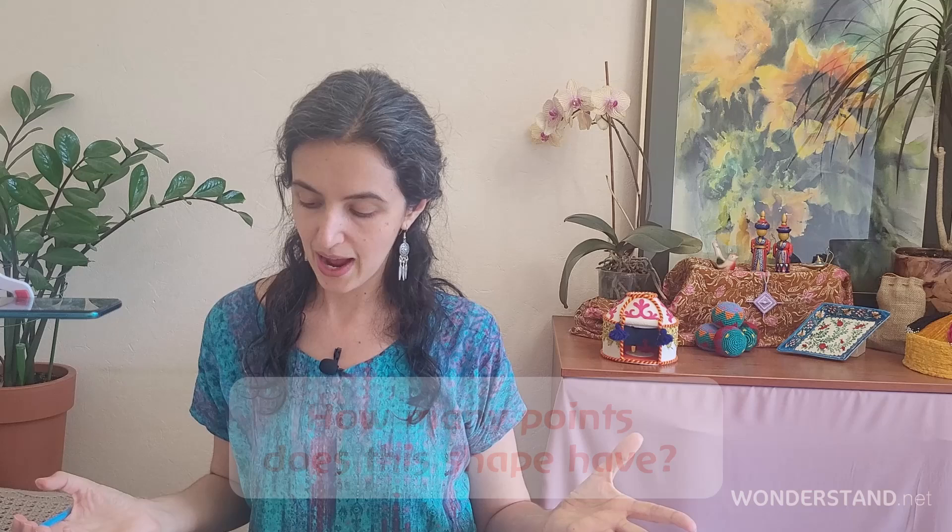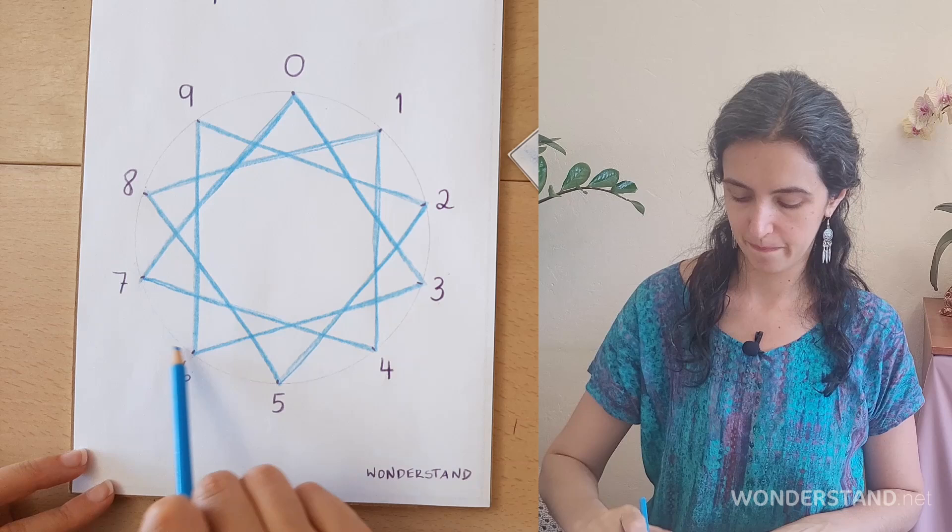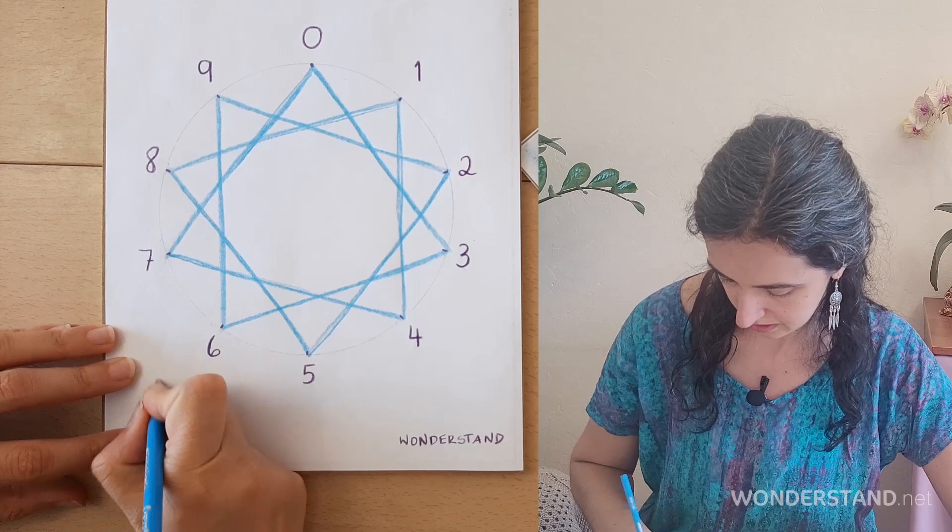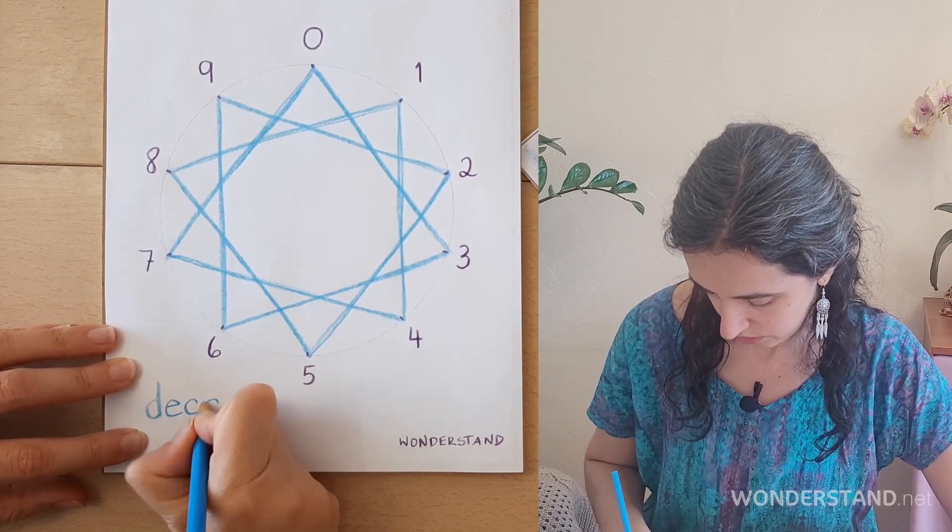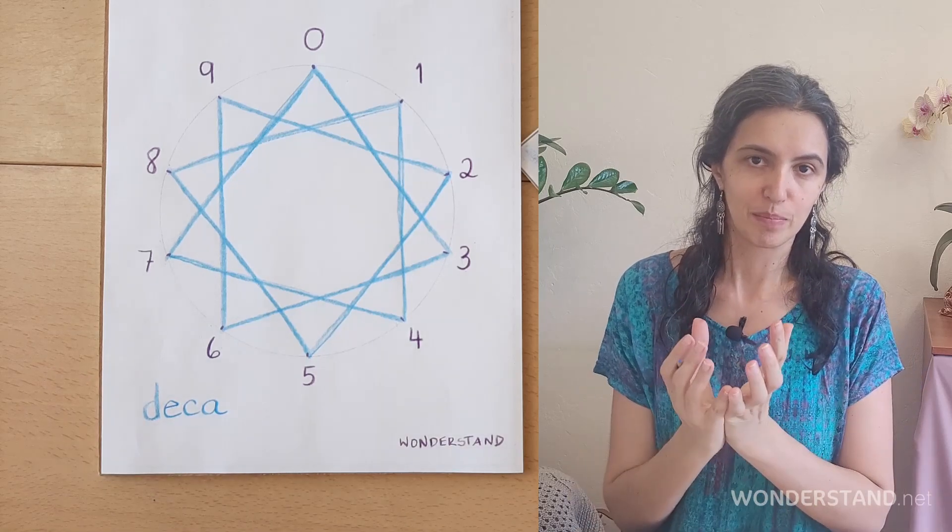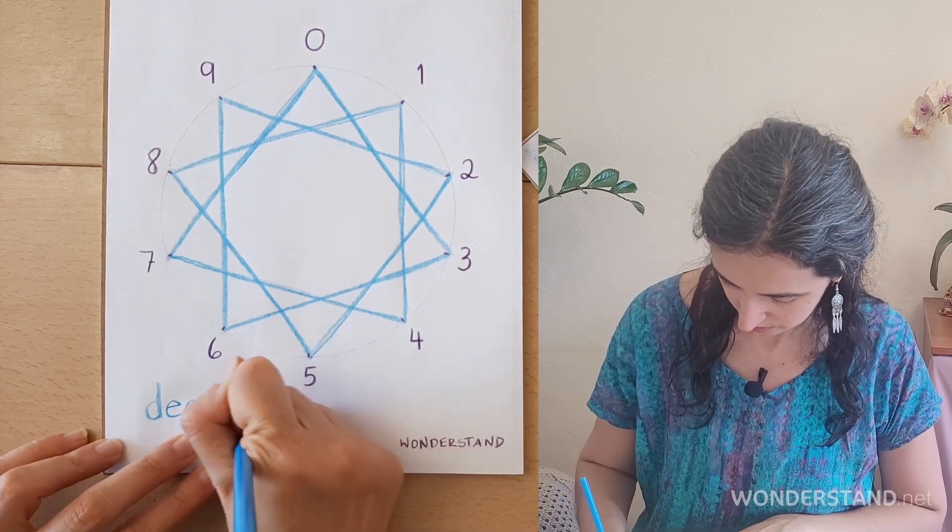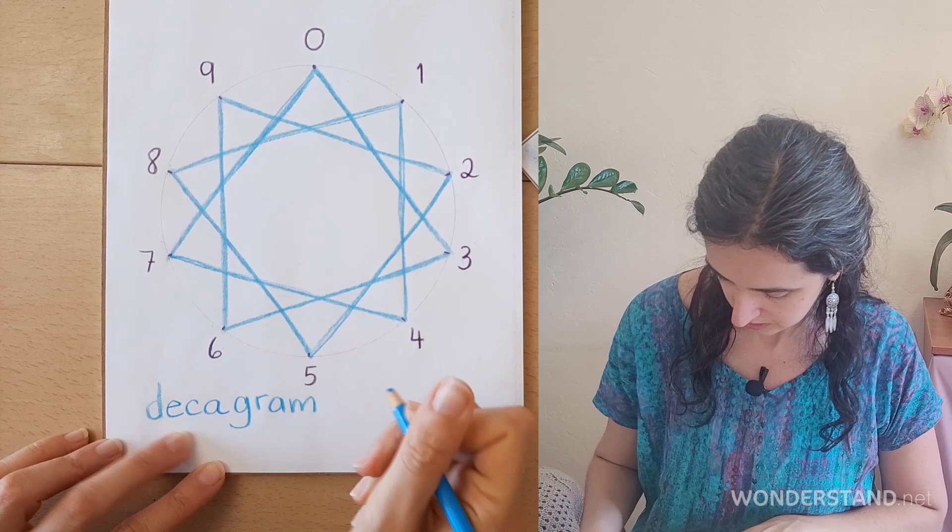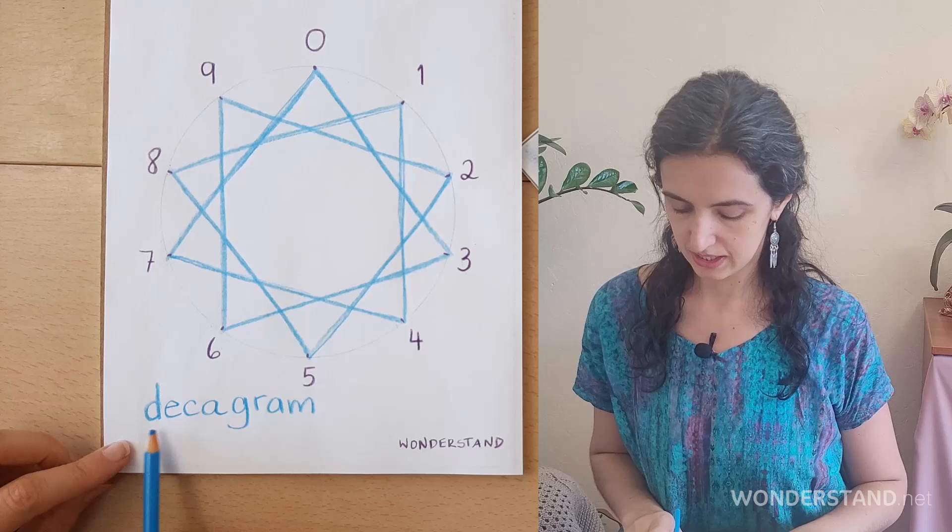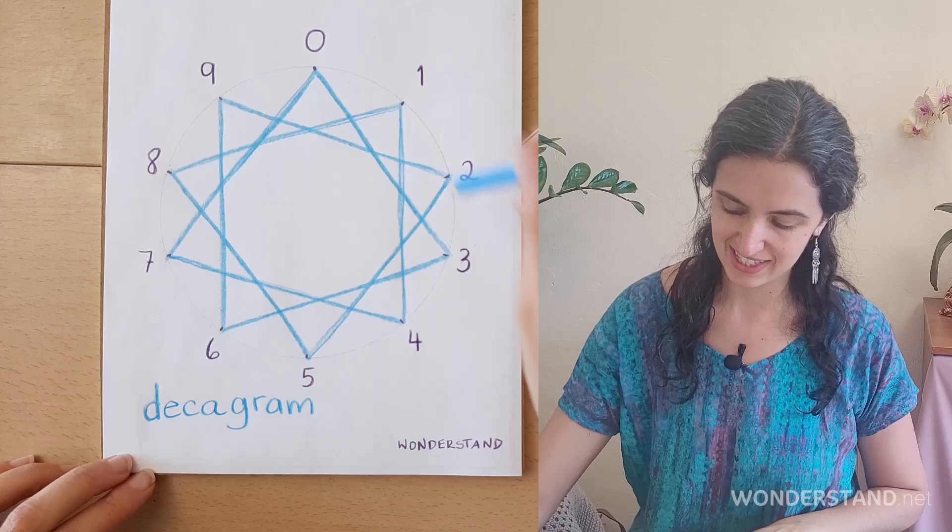So my question to you is, how many points does this shape have? And if you count them, it has 10 points. And 10, the prefix, how do you say a collection of 10 years, a period of 10 years? A decade. Decade. So in geometry, this 10-pointed star is called a decagram. Deca. Deca is the Greek prefix, the start of the word, for 10, because it has 10 points.